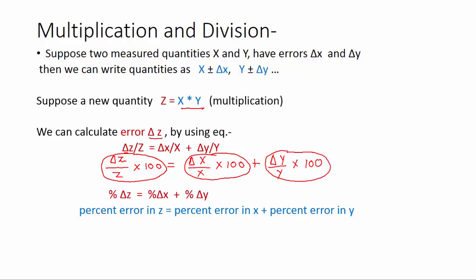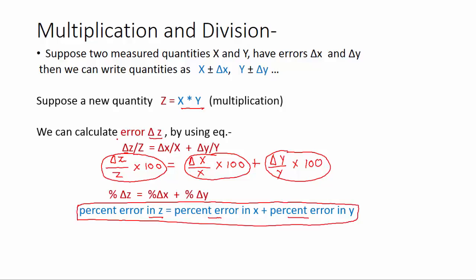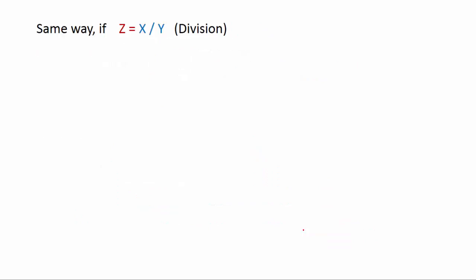So we get a new formula: percentage error in z equals percentage error in x plus percentage error in y. That means if you are given percentage errors in x and y, you can directly use this formula to find percentage error in z. So we have two kinds of formulas: if you are given absolute errors, use the first formula; if you are given percentage errors, use the second formula.